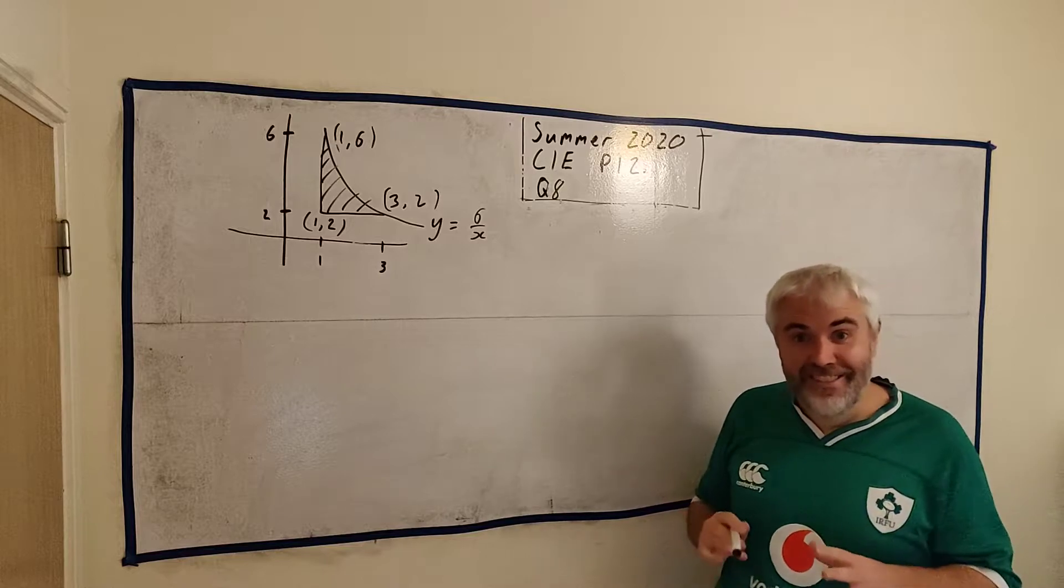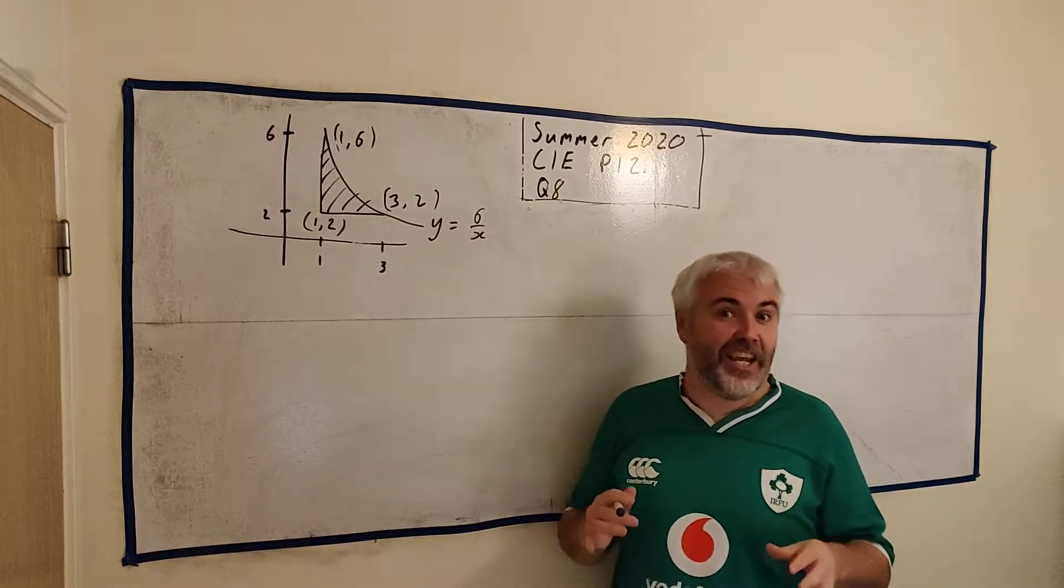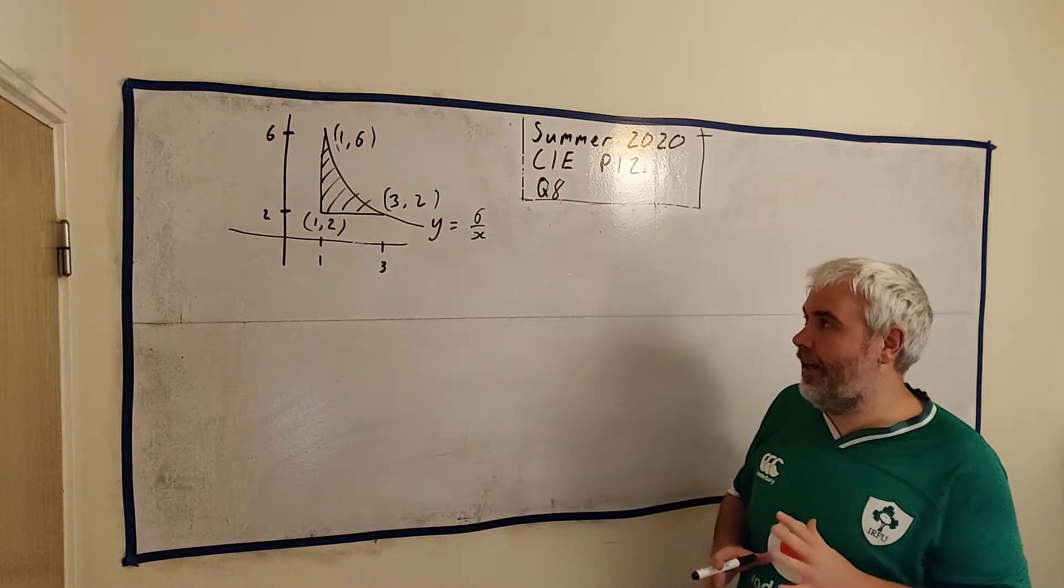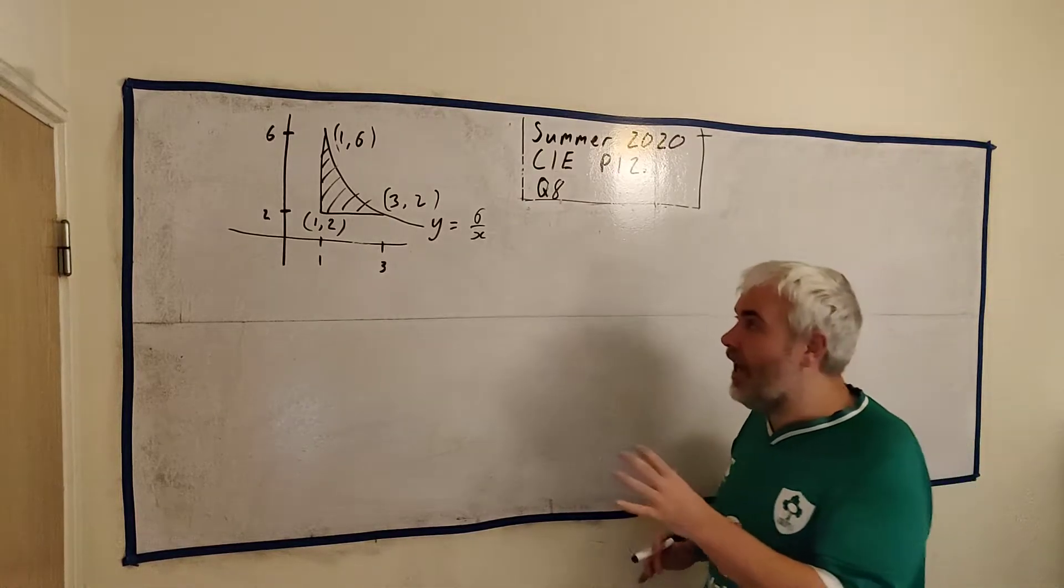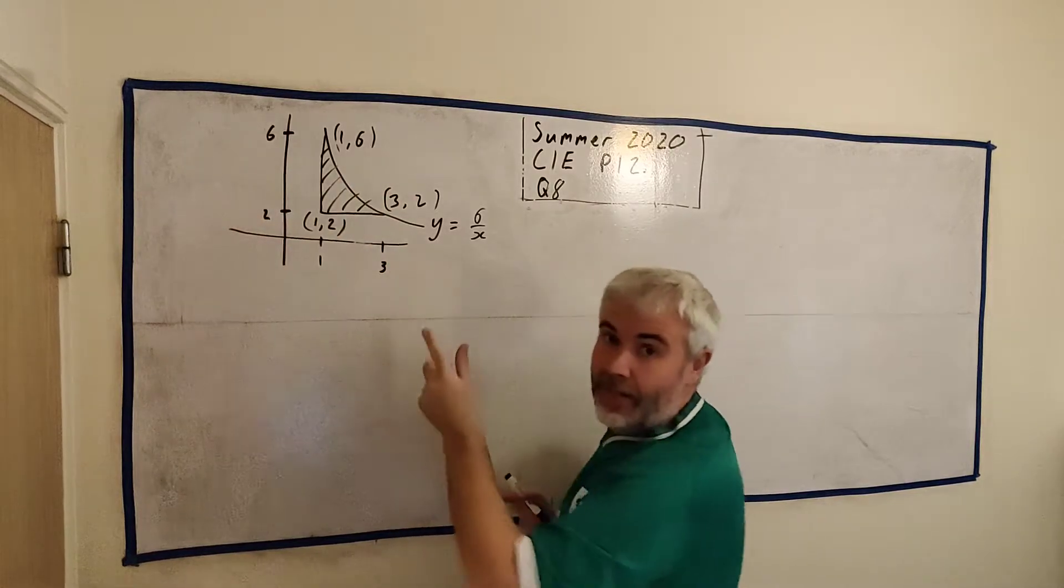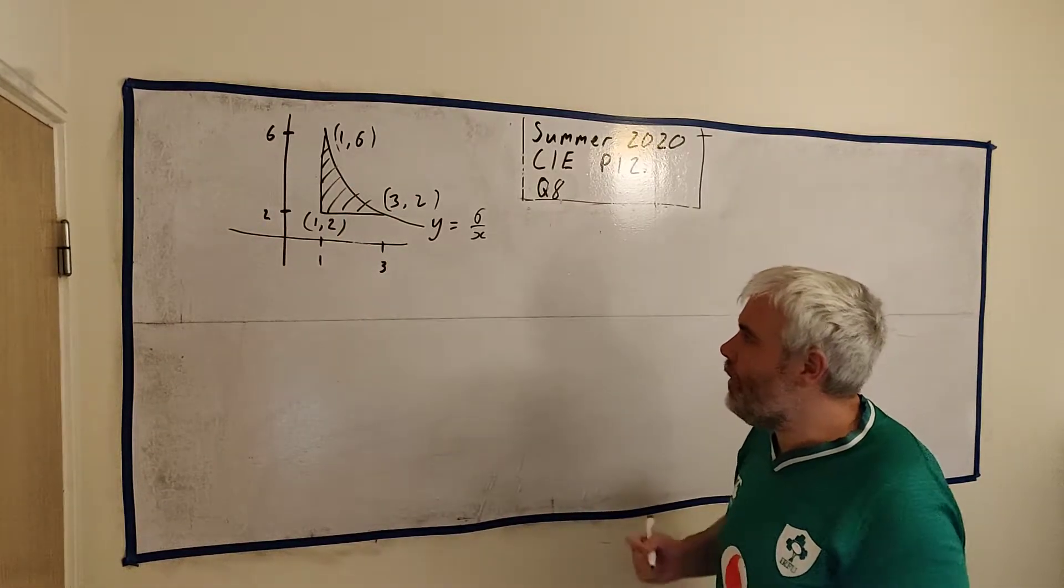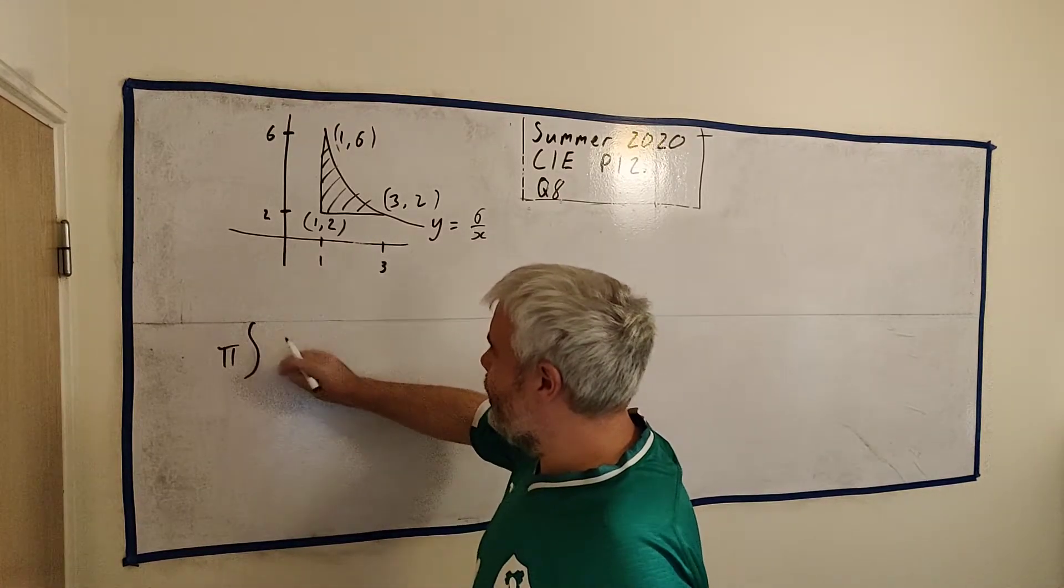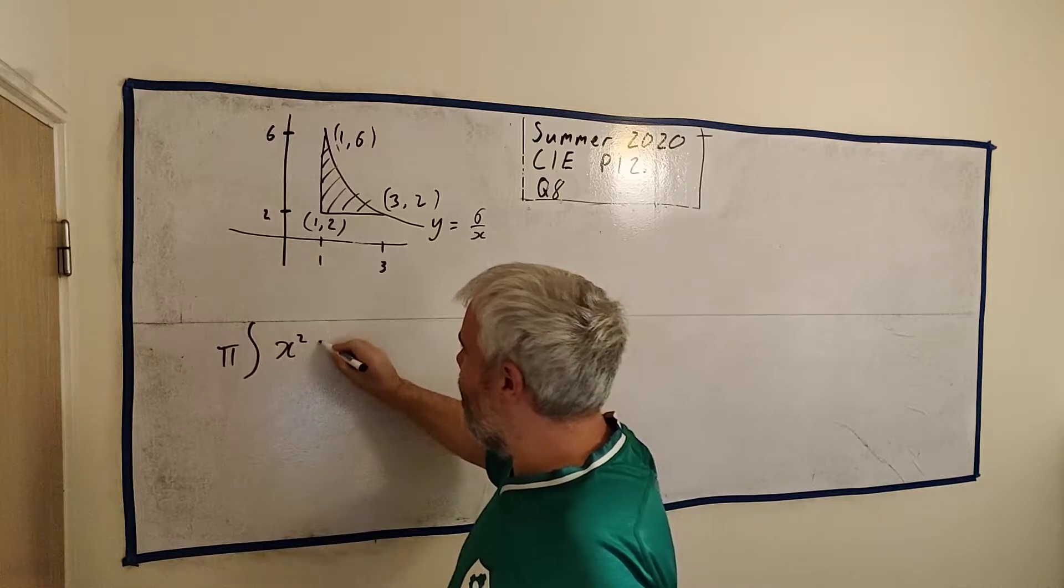This is a really cool question because the answer is going to look just like a volcano. Don't believe me, stick with me and we'll try and get it out of it. So what the question asks is it wants us to rotate this shape around the y axis. There's a couple of ways to do that, but the main way, we have a formula: π times the integral of x squared dy.